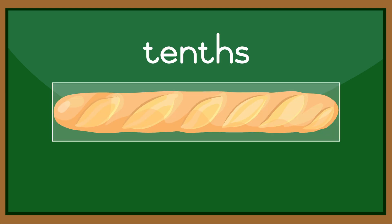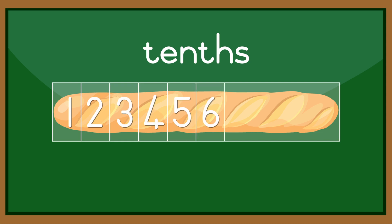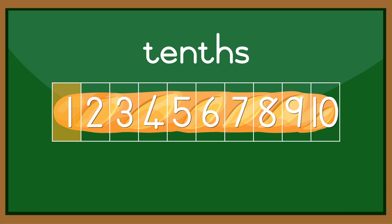In this example, the whole is divided into ten parts. Those parts are called tenths. One tenth, two tenths, three tenths, four tenths, five tenths, six tenths, seven tenths, eight tenths, nine tenths, ten tenths, which equal a whole.